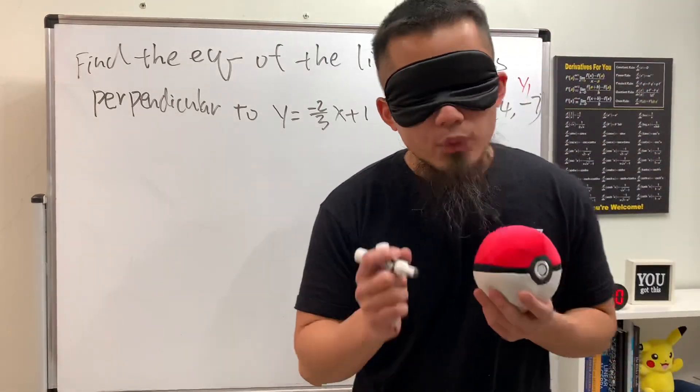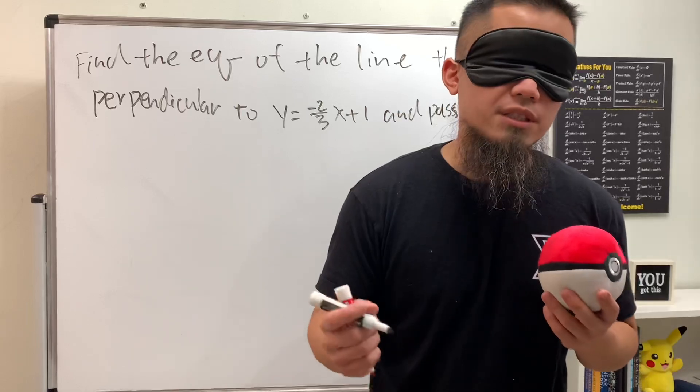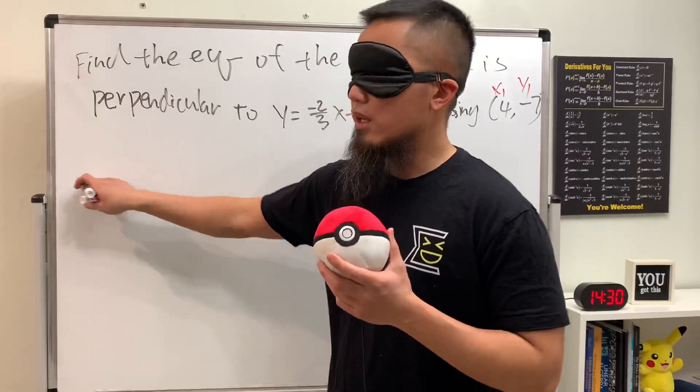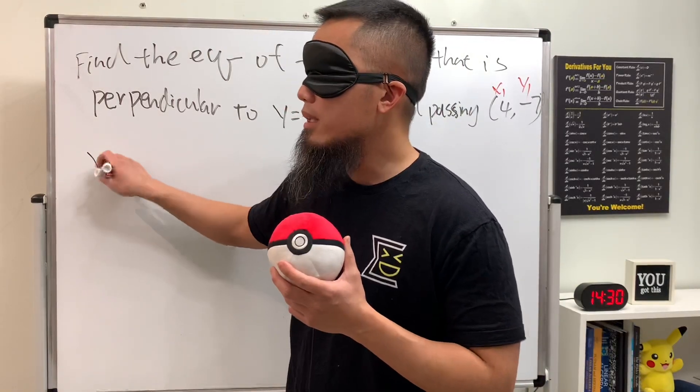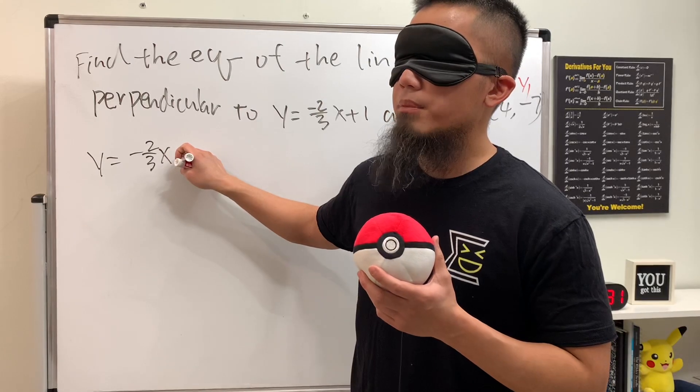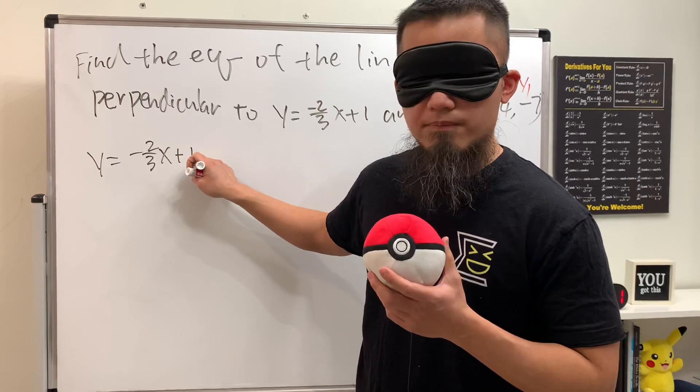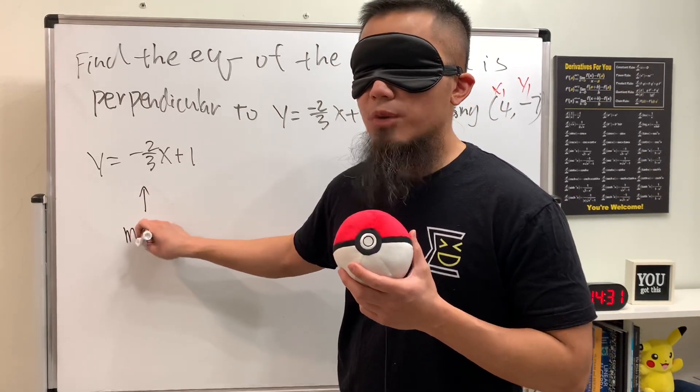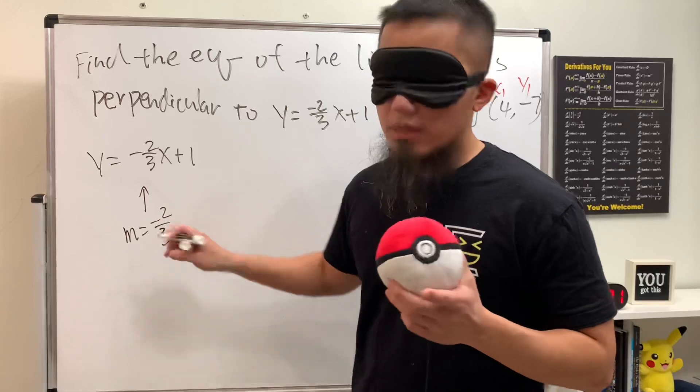Remember, the given line is y equals negative two-thirds x plus one. The slope is negative two-thirds, but that's not what we want to use.